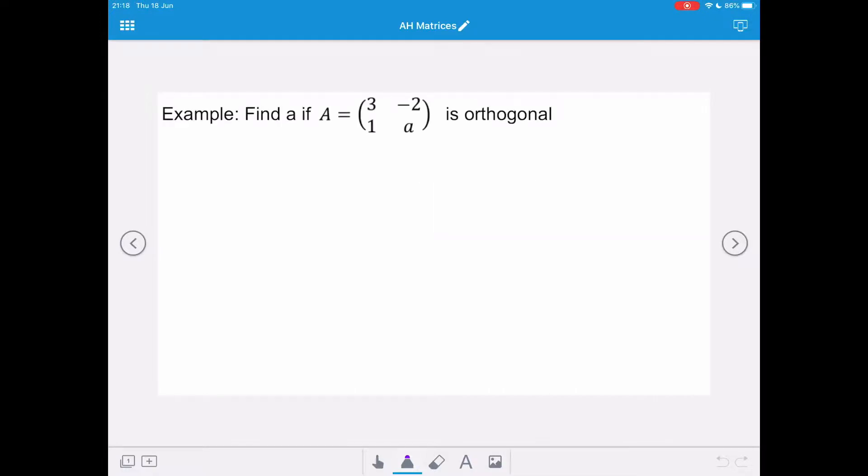So in this example, we've got matrix A is [3 -2; 1 a]. We're told that it's orthogonal and we want to find the value of a.